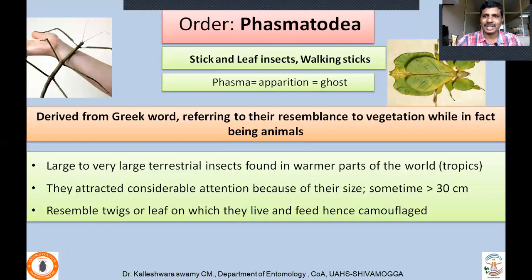Order Phasmatodea — commonly called stick and leaf insects, also called walking sticks. Etymologically, 'phasma' means apparition or ghost. The name is derived from a Greek word referring to their resemblance to vegetation when they are in fact animals. They are camouflaged wherever they are. Leaf insects exactly look like leaves; stick insects, usually found on shrubs, look like plants. That is how they got this name.